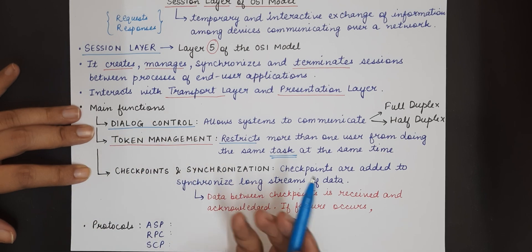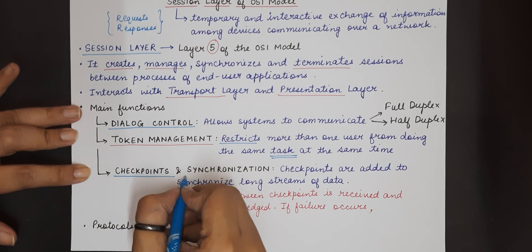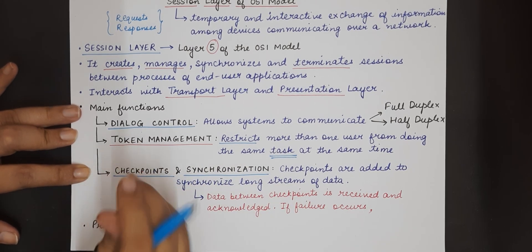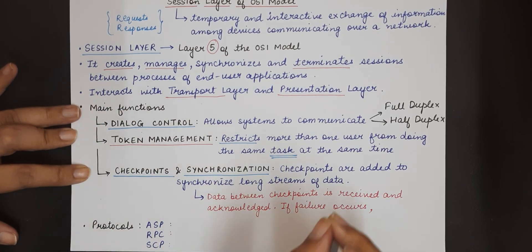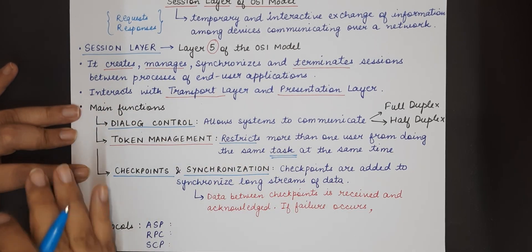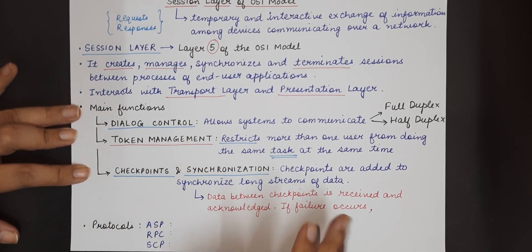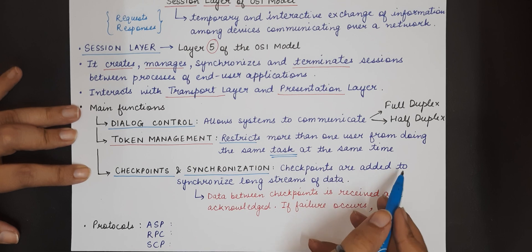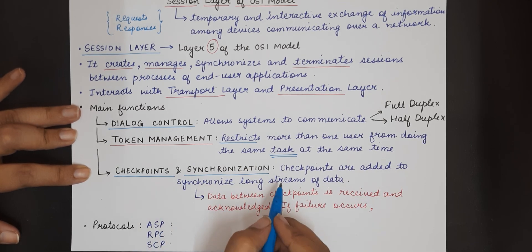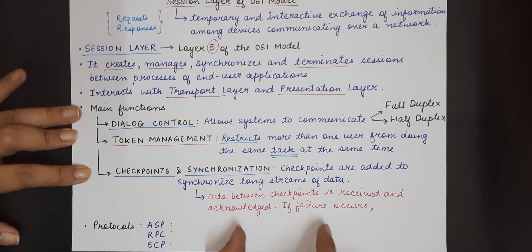Next comes the functionality of checkpoint and synchronization. Checkpoints are the points that are inserted by the session layer in between the conversation that is happening between the two devices and these checkpoints help to synchronize the communication or the data exchange that is happening. Checkpoints are added to synchronize long streams of data such that the data between any two checkpoints is received and acknowledged.